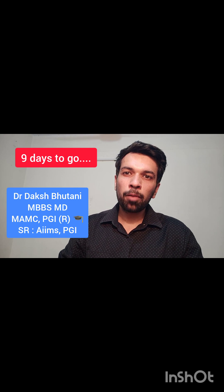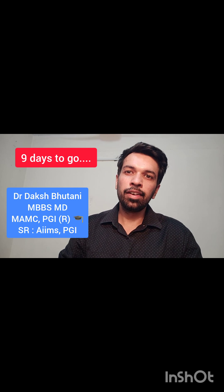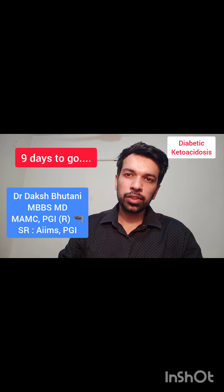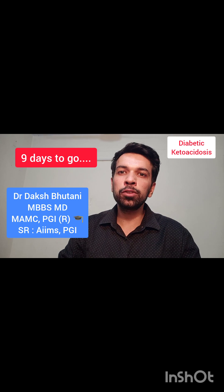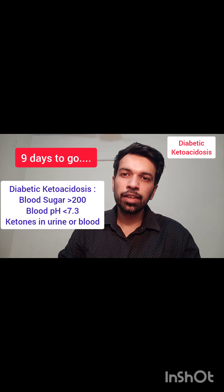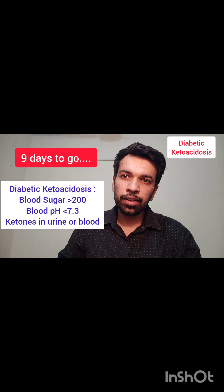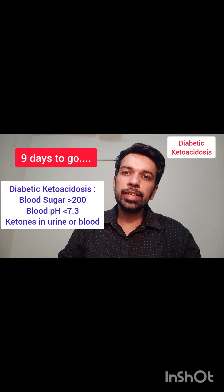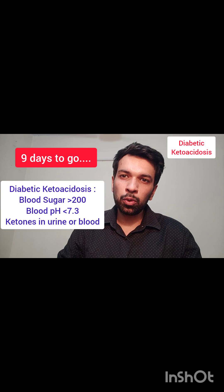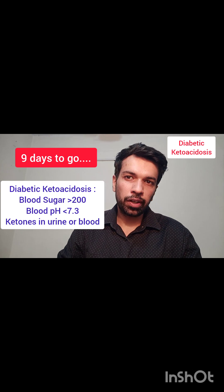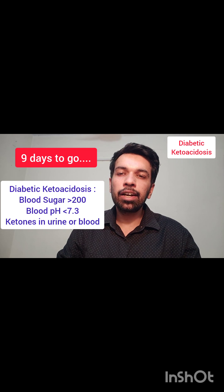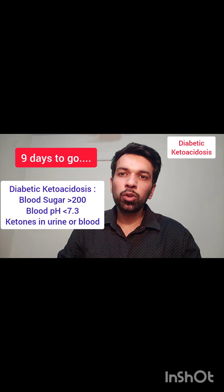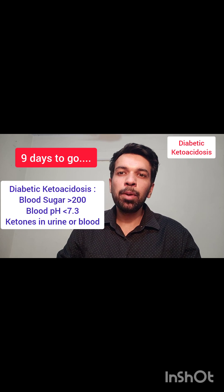The next important topic is diabetic ketoacidosis. Diabetic ketoacidosis diagnosis requires RBS more than 200, blood pH less than 7.3, and presence of ketones either in blood or in urine.